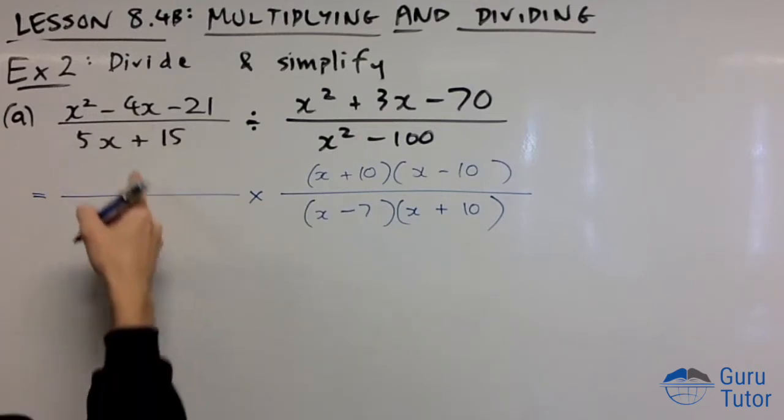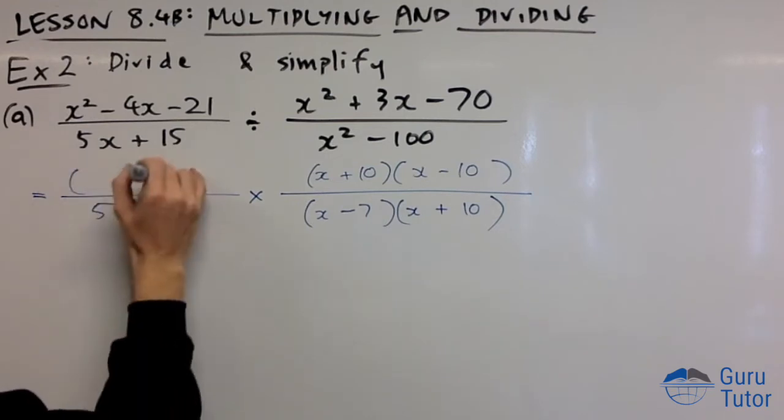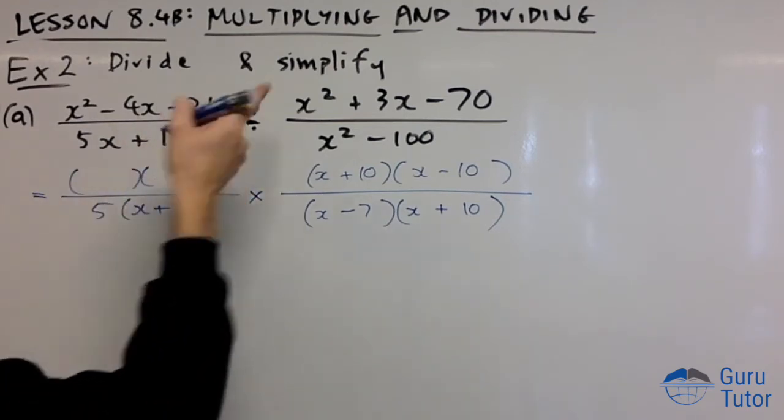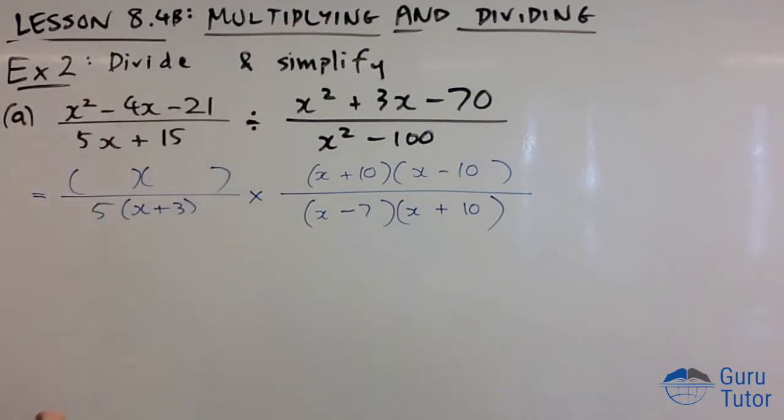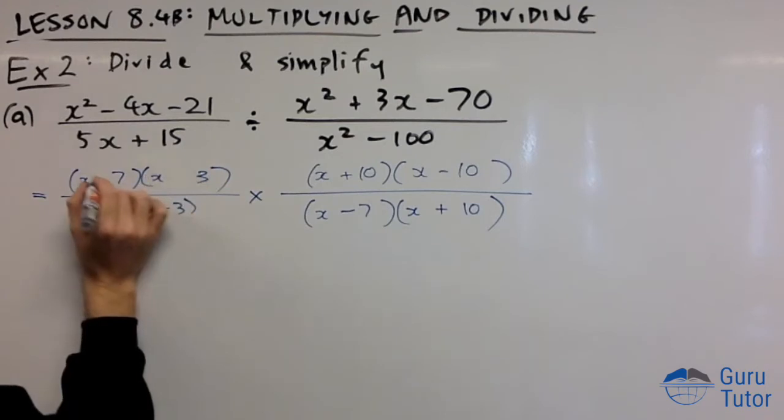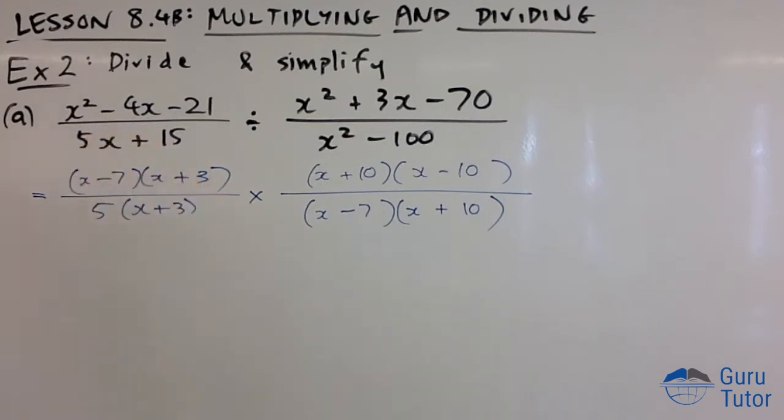Over here this does not flip. On the bottom we can take out 5(x+3). On the top, what can we factor? Two numbers that multiply to give -21, add to give -4? 7 and 3. To get -4, it's (x-7)(x+3).